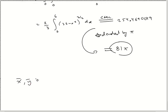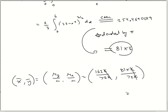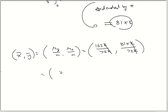So my center of mass is M sub y over little m and M sub x over little m. For x̄: 162k over 72k — k's cancel — giving 9/4. For ȳ: 81πk over 72k — k's cancel — giving 9π/8. There's your answer: (9/4, 9π/8).